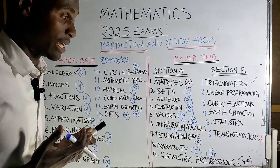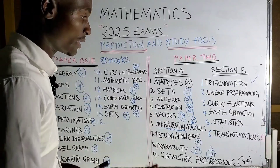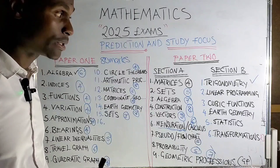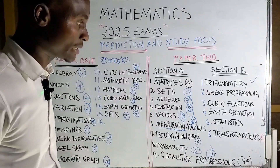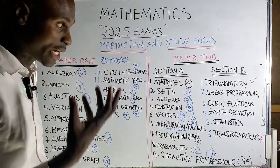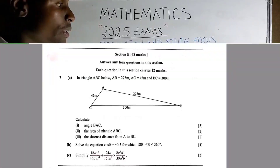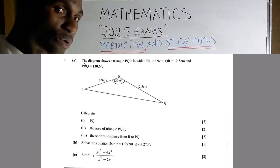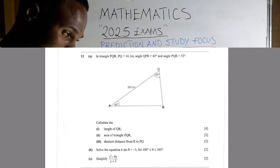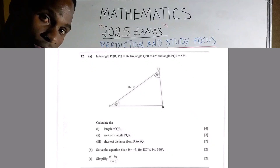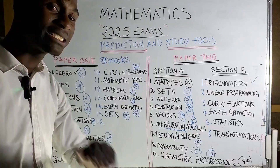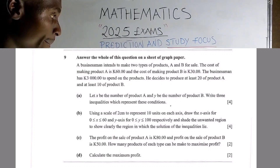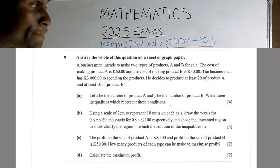The way I've listed the topics is the order I advise you to answer them. Trigonometry is number one — for the students I teach, I always advise them to prioritize trigonometry. Trigonometry can be either cosine rule or sine rule. Linear programming is also straightforward — you can finish answering it within about eight minutes.